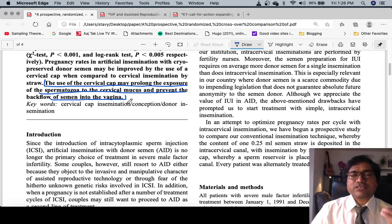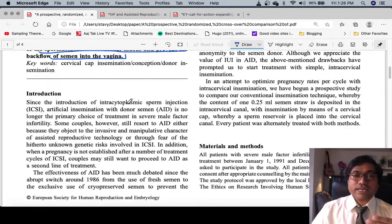Instead of paying 2.5 lakh to 3 lakh per cycle in IVF, you can still try at home. And five to six cycles will give you advantage and chance to become pregnant. This is the data.